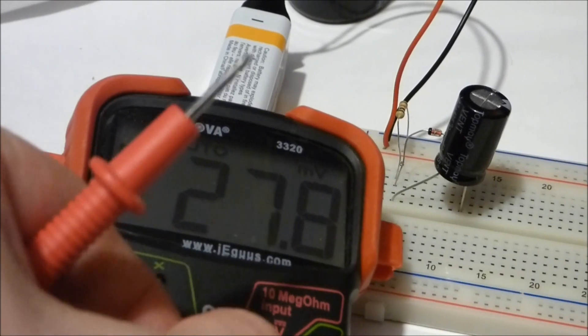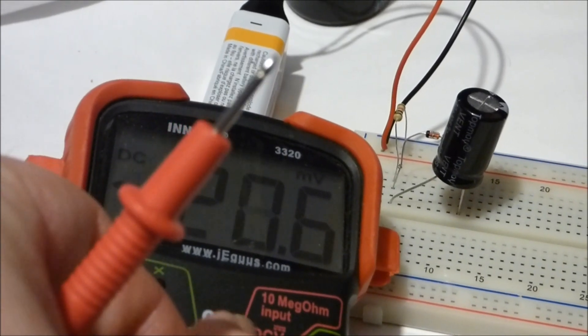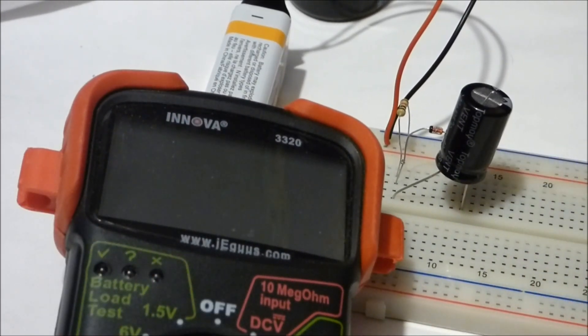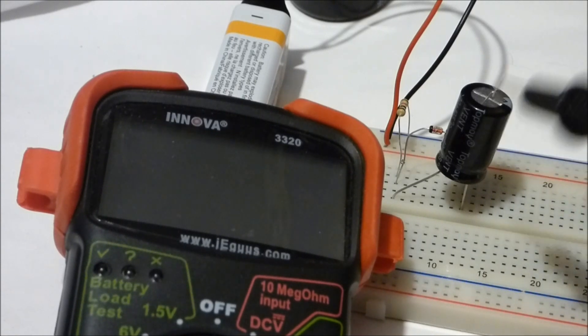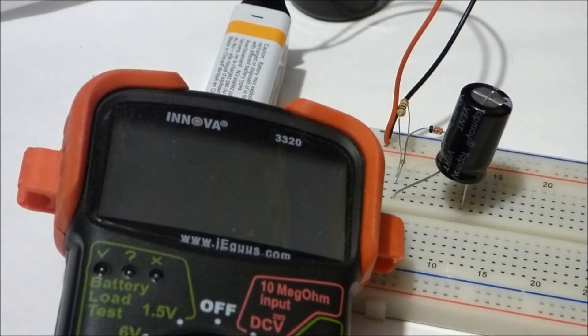I fried this diode, so now it conducts even backwards. That should be a 3.3 volt diode but it's just letting everything go through. And I did that to two of them goofing around. I tried putting them backwards to measure some stuff and apparently that was too much current for them.